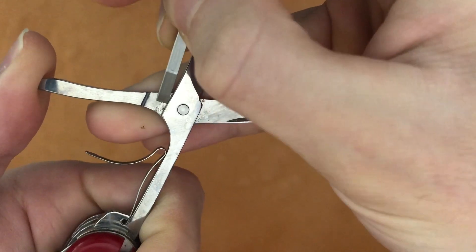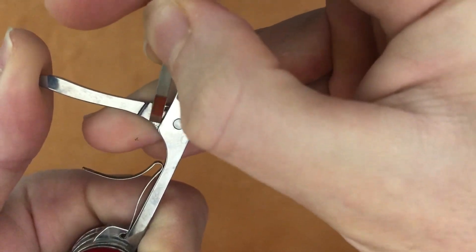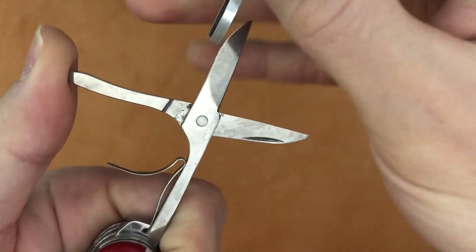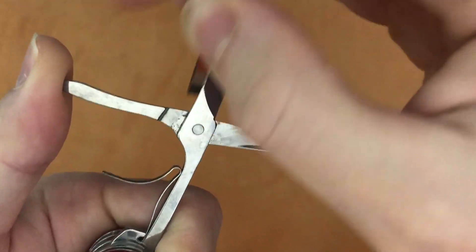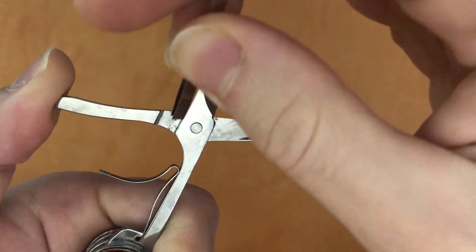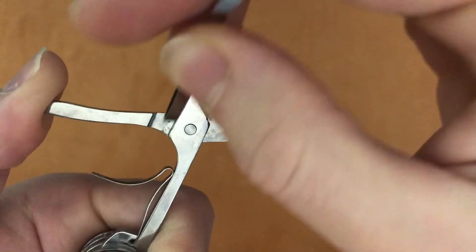Just keep the tweezers flat against the tool and you can see that rust comes off very easily. This is a very rust resistant, corrosion resistant steel that Victorinox uses.